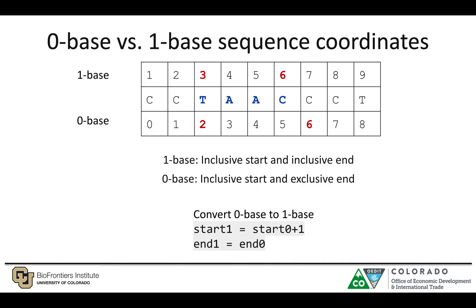In a one-base system, the feature would be labeled as chromosome example one, start three, stop six. However, in a zero-base coordinate system, the start position is labeled as two since numbering starts at zero, and because it is exclusive for the stop coordinate, the stop will also be six in this example. To convert from zero-base to one-base, the start in one-base equals zero-base start plus one, and the end coordinates remain the same.